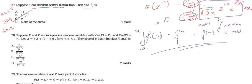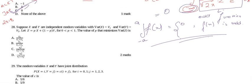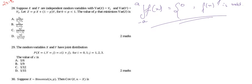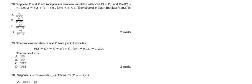The answer to question 27 is option C. Now let's move on to question number 28. Question 28 says: suppose X and Y are independent random variables with variance of X equal to v1 and variance of Y equal to v2. Let Z = pX + (1−p)Y for p between 0 and 1. The value of p that minimizes variance of Z is. First let us find variance of Z.